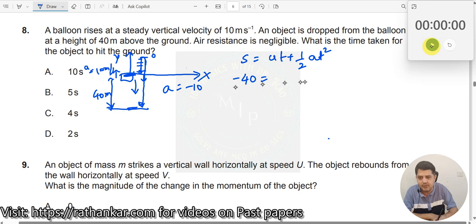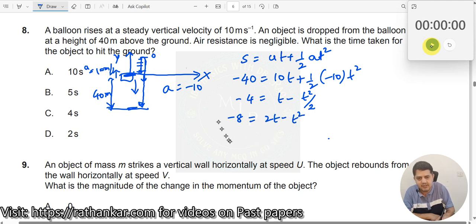Minus 40 equals u. You are throwing it upwards, so it is 10 into t plus half into a is minus 10 multiplied by t square. If I take 10 common outside, I get minus 4 equals t minus t square divided by 2. If I cross multiply, I get minus 8 equals 2t minus t square. Bringing all terms to the other side, I get t square minus 2t minus 8 equal to 0.